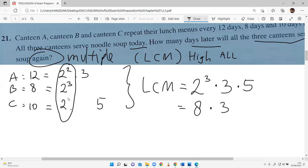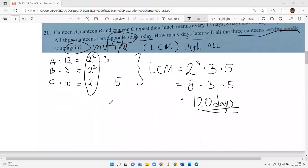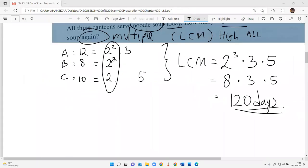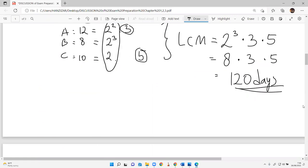8 times 3 times 5. Which do you prefer, 8 times 3 first or 8 times 5 first? 8 times 5 is easier: 40 times 3 is 120 days. So in 120 days more, all canteens serve noodle soup again. How do I get the 3 and 5? Because it is present in 12 and 10. LCM, take all.